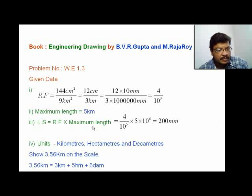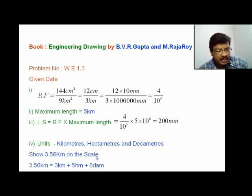Now read the problem carefully and extract the units to be displayed on the scale. The units asked are kilometers, hectometers, and decameters. You also have to show a distance of 3.56 km on the scale. 3.56 km means 3 km, 5 hectometers, and 6 decameters.